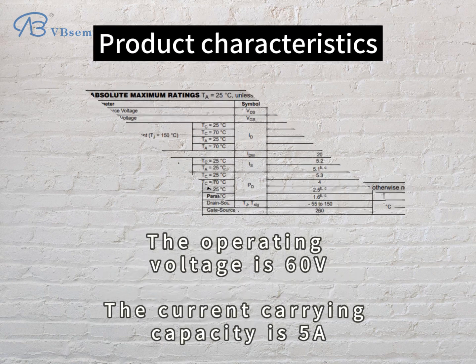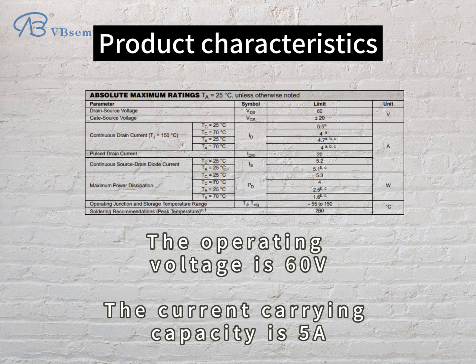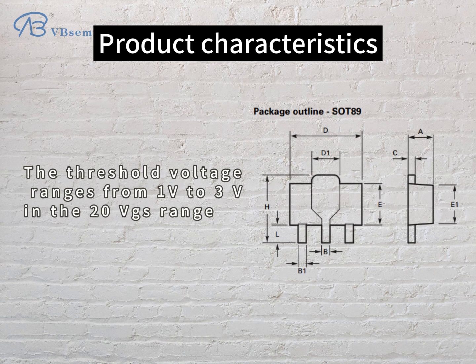Product characteristics: the operating voltage is 60V, the current carrying capacity is 5A, the threshold voltage ranges from 1V to 3V, in the 20V GS range.